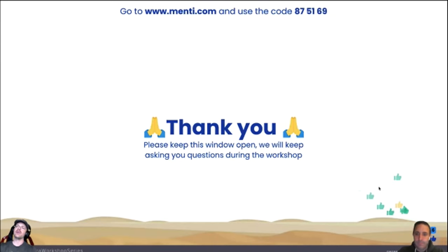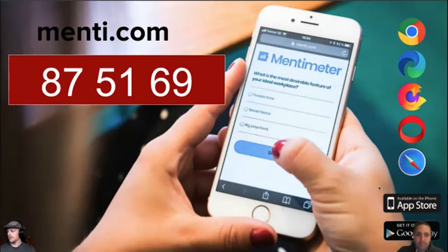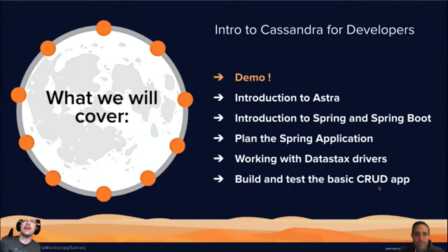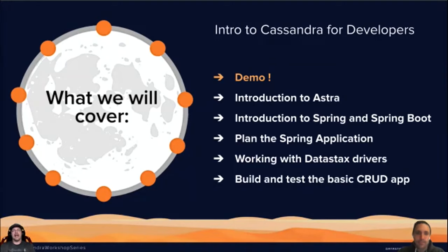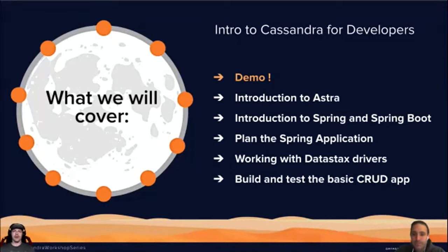First we'll give you a quick demo of what we're doing today in the workshop. Then we'll give you an introduction to Astra, followed by Cedric giving you a primer on Spring and Spring Boot — what those are about and how we can plan our application using Spring. We'll follow up with working with the DataStax drivers. To be clear, the DataStax drivers can be used with open-source Cassandra, Astra, DataStax Enterprise — whatever. They're essentially the standard for open-source Cassandra and do a ton right out of the box. The last part is building and testing our basic CRUD app.